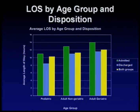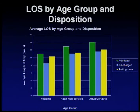The average length of stay for admitted pediatric patients is about 11 hours. The average discharge pediatric stay is a little over 8 hours. The discharged adult non-geriatric stays about 13 hours. The discharged non-geriatric patient stays about 11 hours.